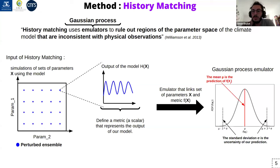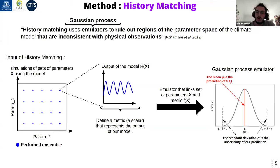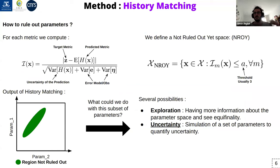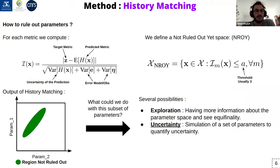In our case the emulator is a Gaussian process, which is really useful because it provides both a prediction for a new set of parameters of this metric and a standard deviation that can be interpreted as the uncertainty of this prediction. Once you have built your Gaussian process, you can fully explore the parameter space by running millions of new sets of parameters, and you compute for each new set what we call the implausibility metric.